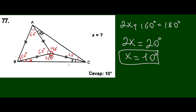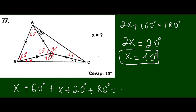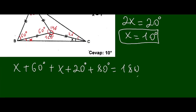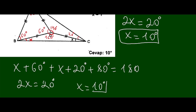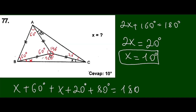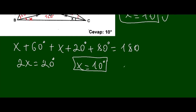This is the first way. But the second way uses triangle ABC: we can write that x plus 60 degrees, the angle B, plus the angle C which is x plus 20 degrees, plus the angle A which is 80 degrees, must equal 180. That gives us 2x equal to 20 degrees again, so x equals 10 degrees. They are the same — whichever way seems easier to you, you can choose, but both are correct.